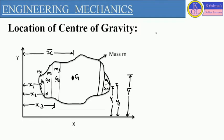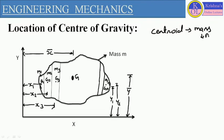As we know the difference between centroid and center of gravity. If we define centroid, centroid we consider as a center point of a plane which has area, volume, and dimension but it does not have mass. There will be no mass for the plane, and that center point is called the centroid.